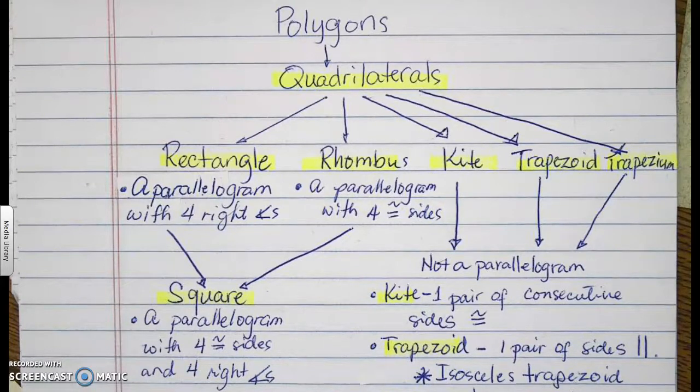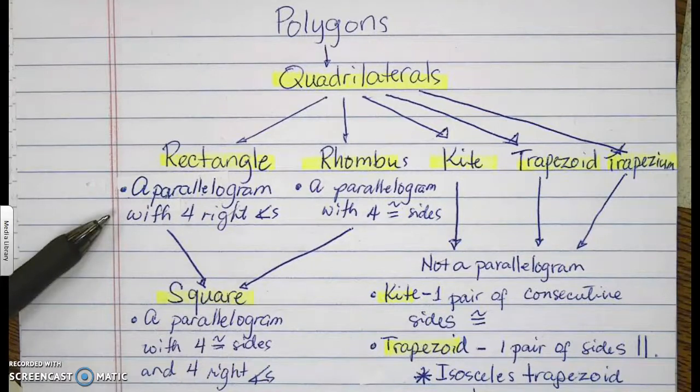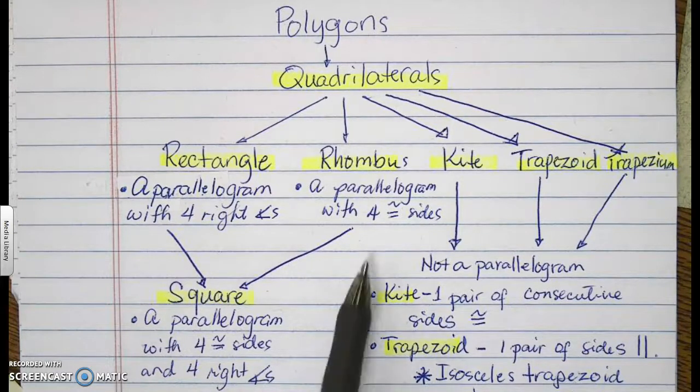A rectangle is a parallelogram with four right angles. A rhombus is a parallelogram with four congruent sides.